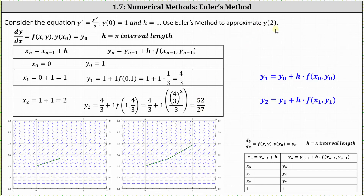Because we're approximating y of two, we stop here. Our approximation for y of two is 52 over 27, or approximately 1.926. Looking at the two graphs, the point on the left is zero comma one, given by the initial condition. The point x sub one comma y sub one is one comma four thirds. Then in the next graph, the point on the right is x sub two comma y sub two, which is two comma 52 over 27.